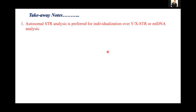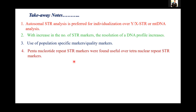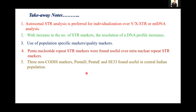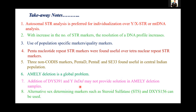The following takeaway notes: Autosomal STR analysis is straightforward for individualization over X, Y, or mitochondrial DNA analysis. With an increase in the number of STR markers, the resolution of a DNA profile increases. We should use population-specific quality markers. Pentanucleotide repeat STR markers were found more useful than tetranucleotide STR markers in our population. Three non-CODIS STR markers — PENTA-D, PENTA-E, and AC33 — were found useful in our central Indian population. Amelogenin deletion is a global problem, and adding only DYS391 and Y-INDEL may not provide a complete solution to amelogenin deletion detection.